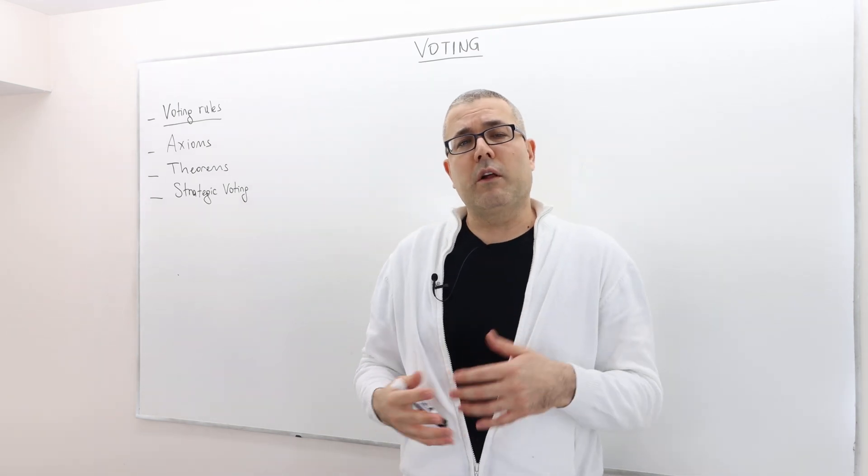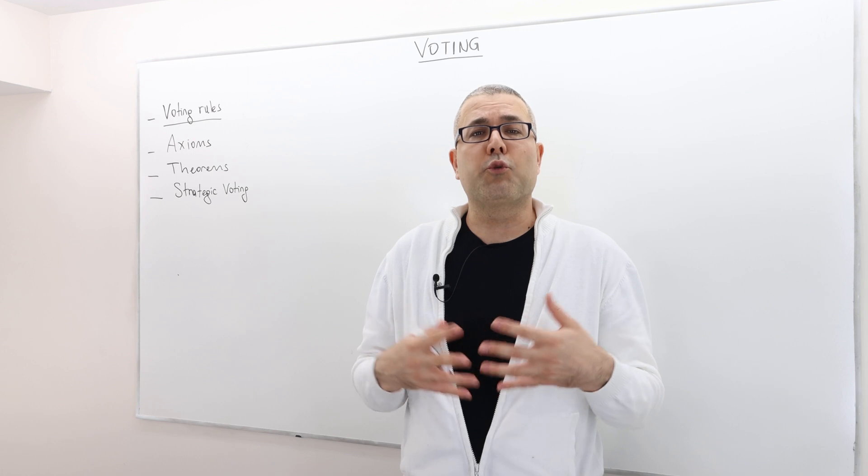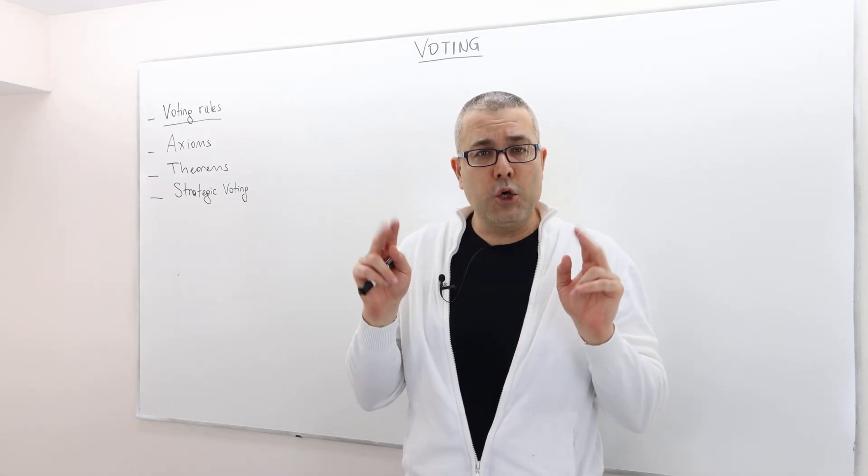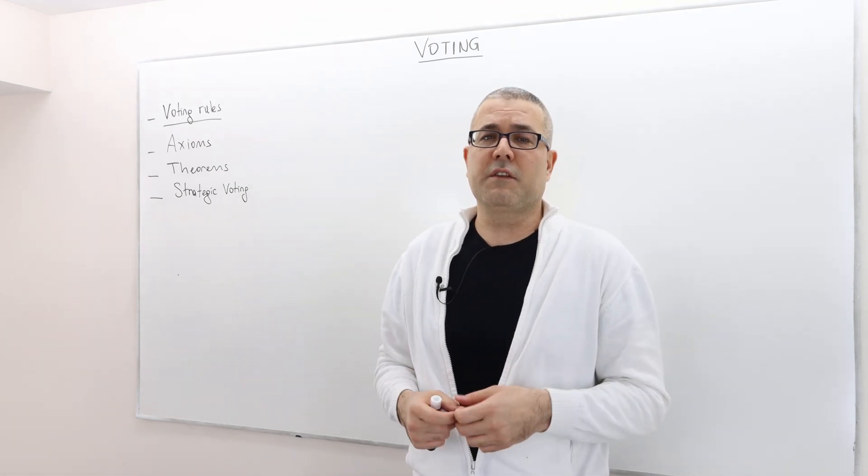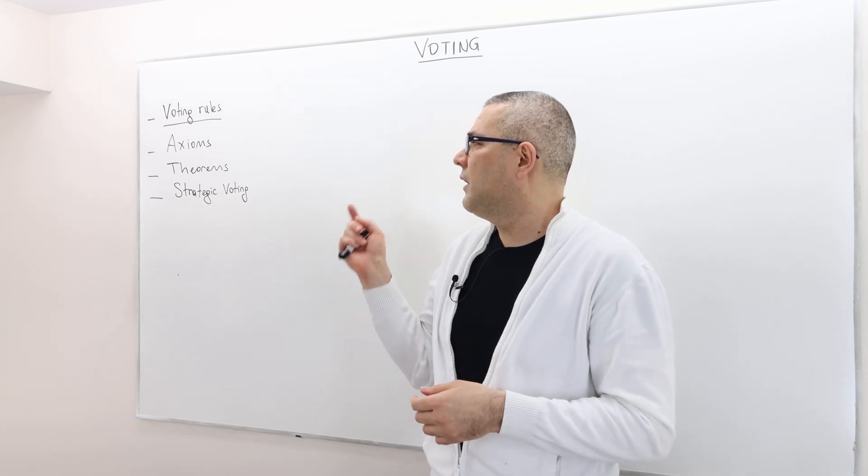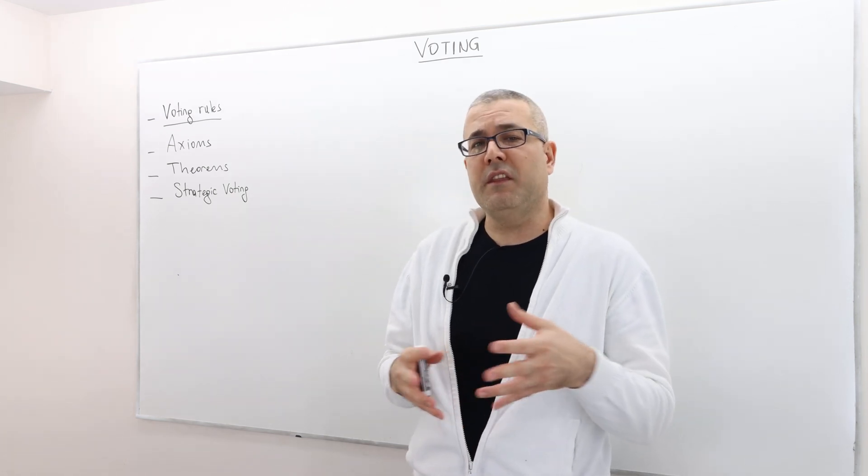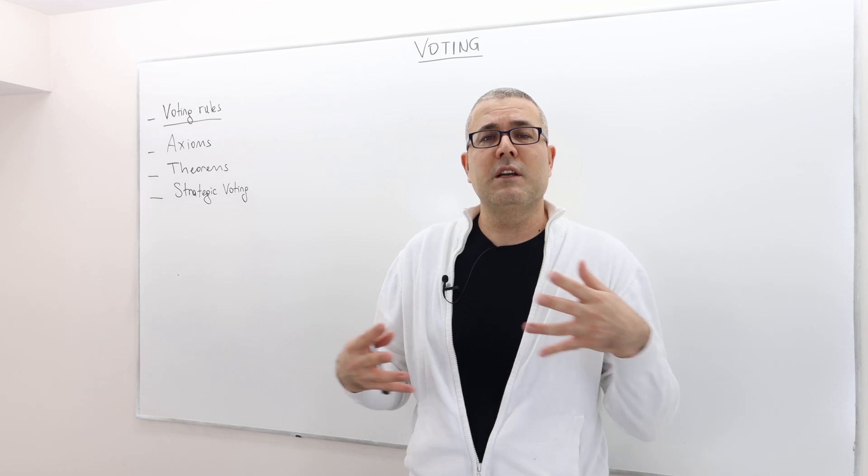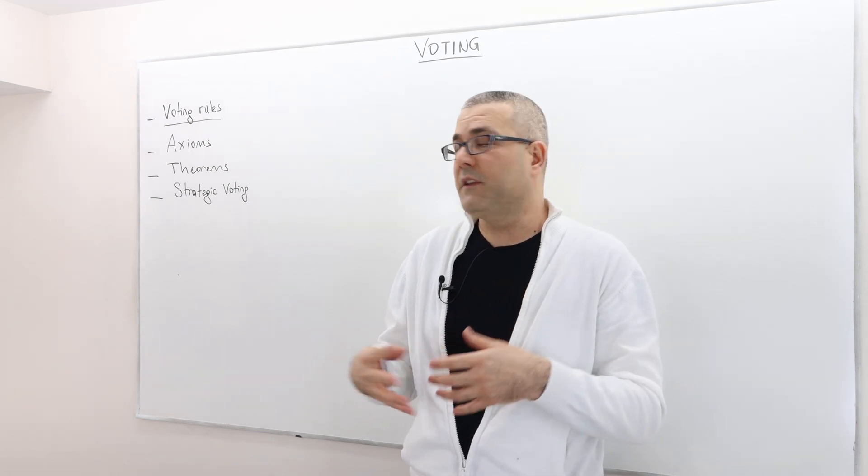I'm going to talk about some axioms. These are properties that a good voting rule should satisfy or we expect them to satisfy. Then I'll give you some theorems, which basically tell us what rules satisfy what properties.